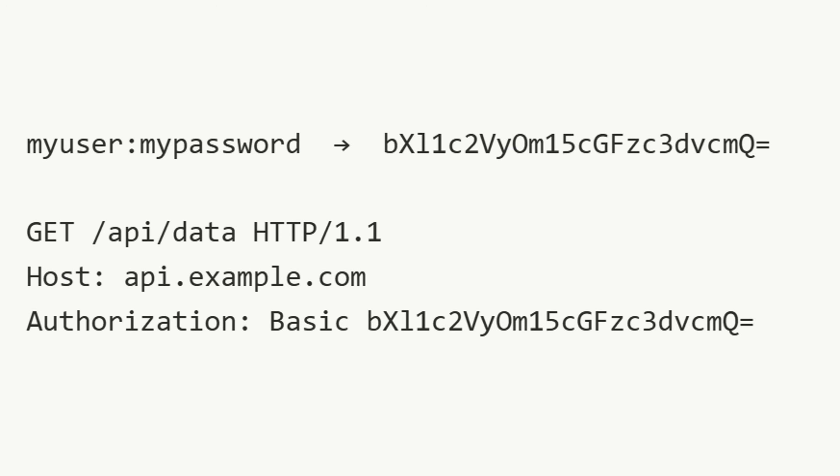To authenticate an API call, you normally separate the username and password with a colon and Base64 encode them. Once encoded, you prepend the word 'Basic' and put it in the authorization HTTP header. When the API receives the request, it compares the username and password to what is stored in the database. If they match, the request is allowed.